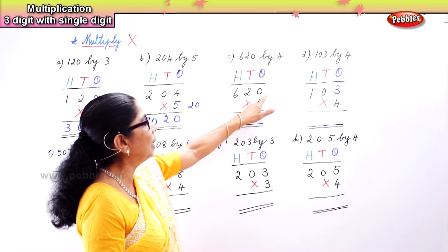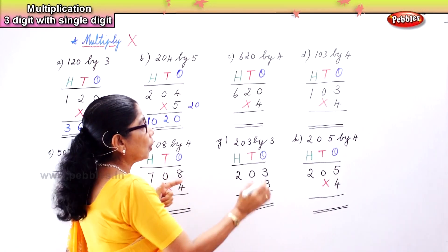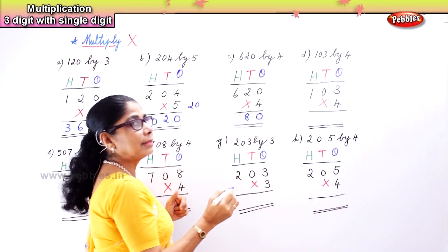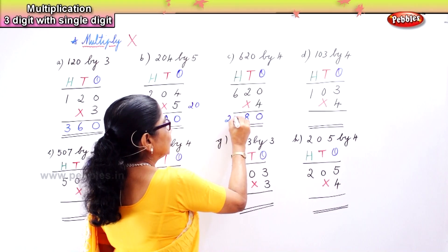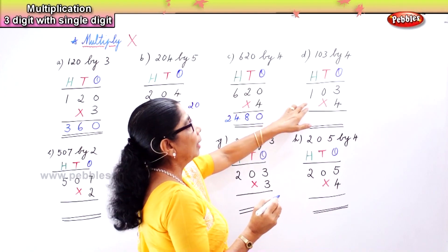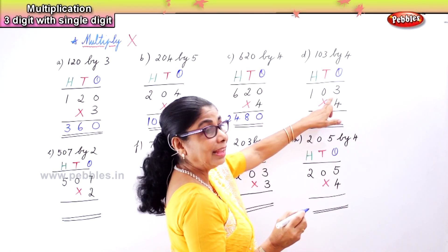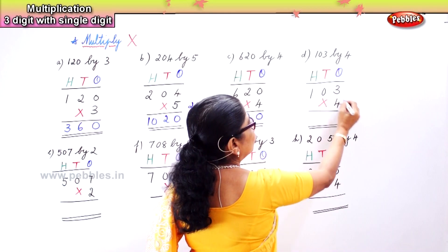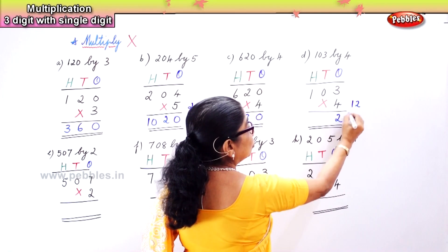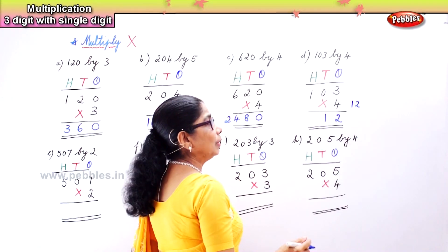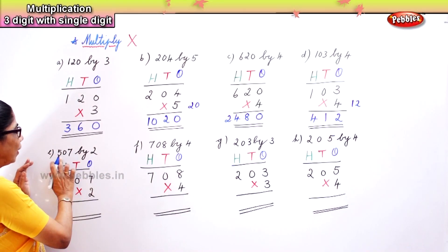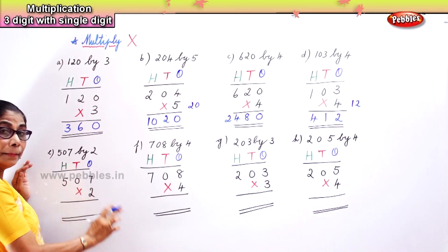Now look at the third sum: 620 by 4 — three-digit number multiplied by four. Zero into four, the product is zero. Four twos are eight. Six fours are twenty-four. In the next sum, 103 multiplied by four — three in the ones place, three into four: four threes are twelve. Since there is zero in the tens place, you put two and carry one.